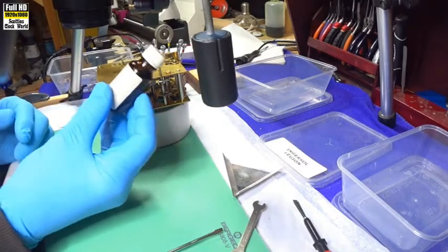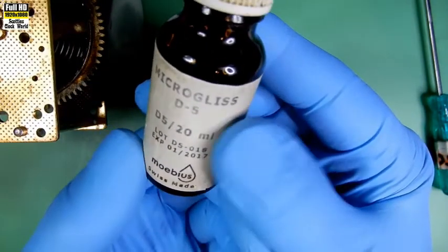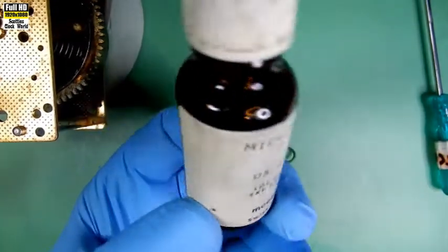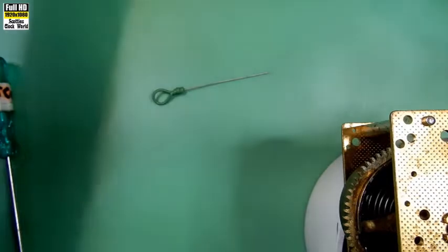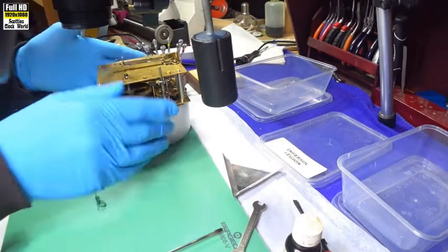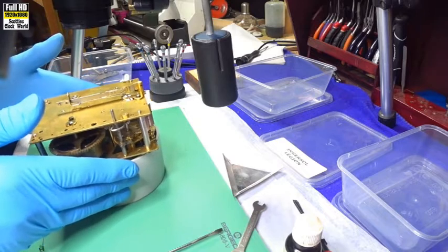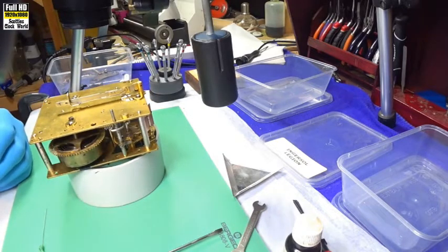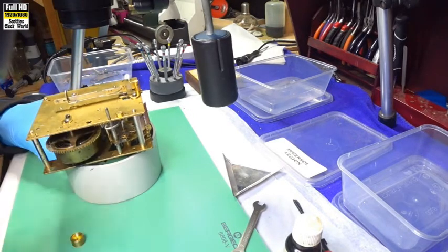As usual, this is the oil we're going to use. Mobius D5. That one there. So, I'll put some into a little container here we'll use to do the oiling.